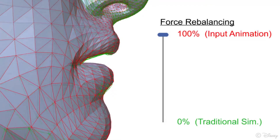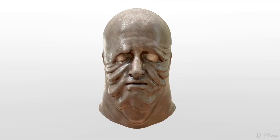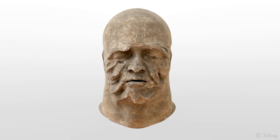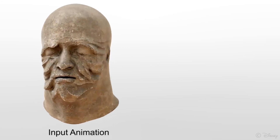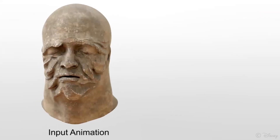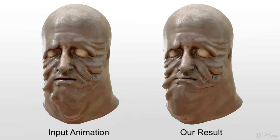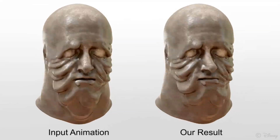Our method can also be applied to fantasy creatures. Here we have a character made of mud, and we have modeled two extreme states. In the wet state, the mud is soft and should exhibit significant secondary motion. But in the dry state, the mud hardens. These states are also represented by two different blend shapes, which are interpolated smoothly. The input animation is a shaking head sequence, with changes of state shown here in real time. And here is our result, complete with dynamic effects.